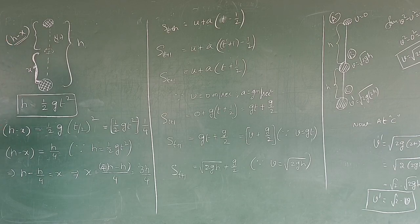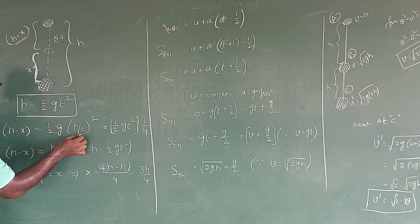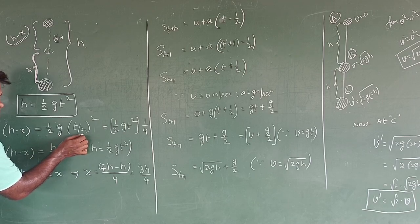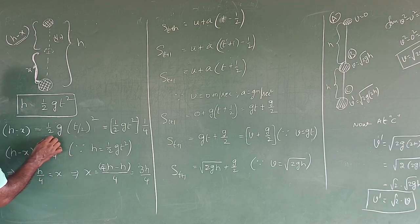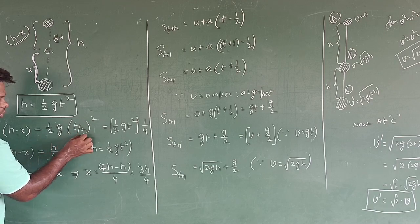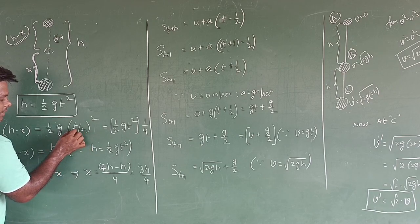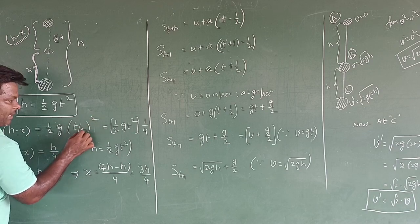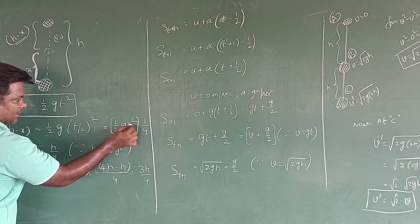For this distance h minus x, the formula is half gt squared once again. T here is half of the time, so it becomes half g into t by 2 whole squared. And t by 2 whole squared is equal to t squared by 4.